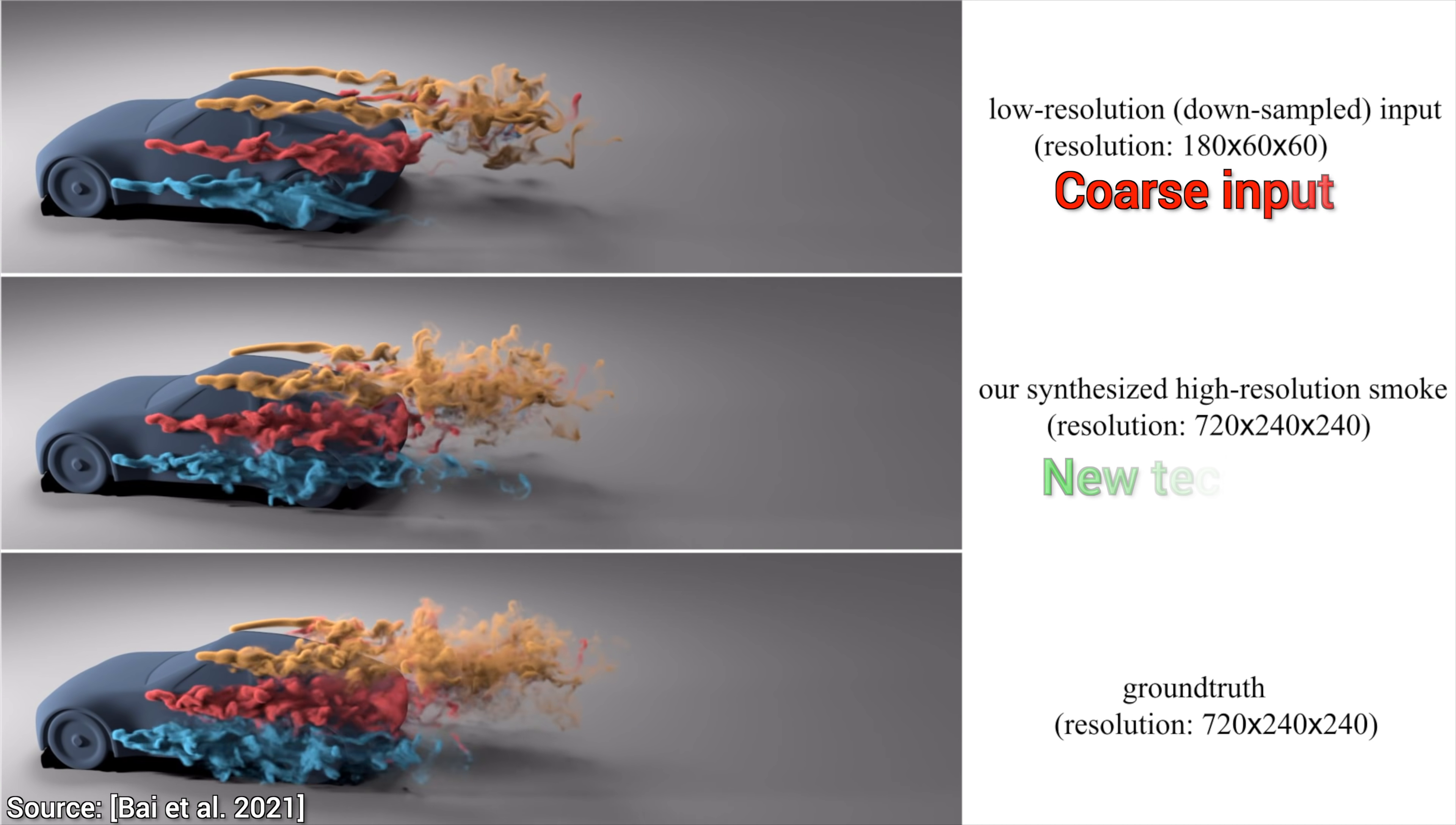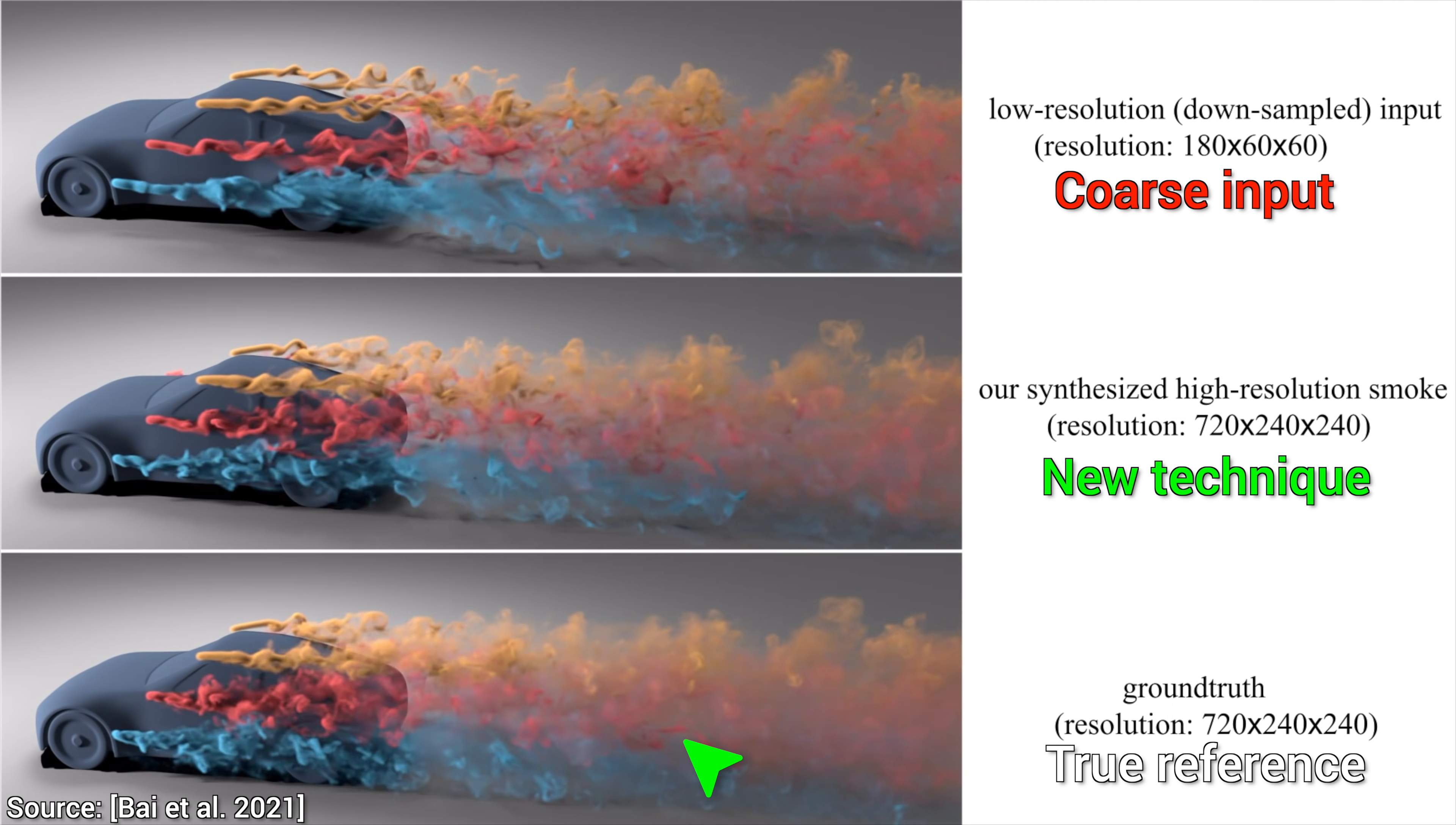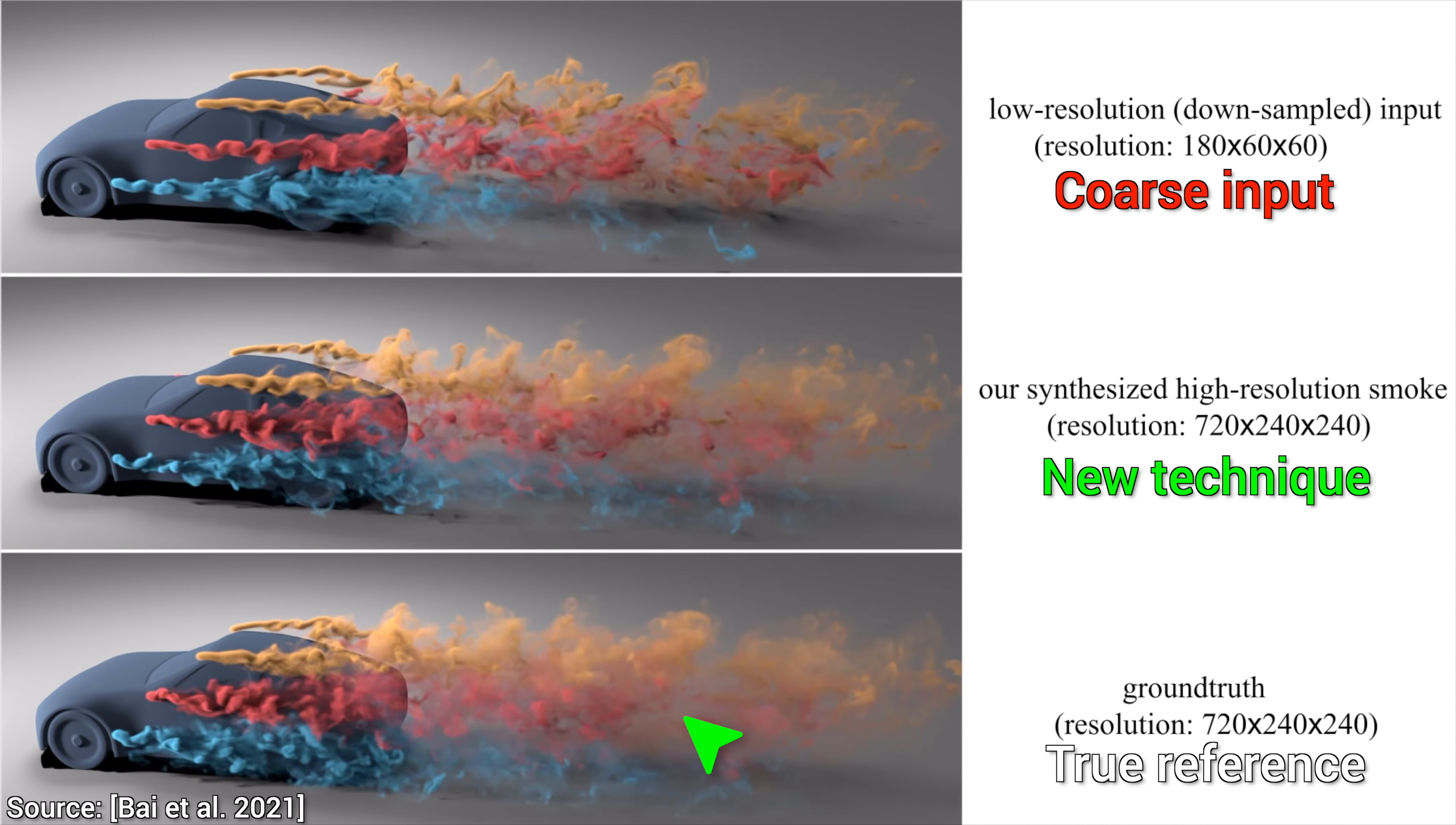But, wait a second, does this even make sense? If we have the real reference simulation here, why do we need the upsampling technique? Why not just use the reference?